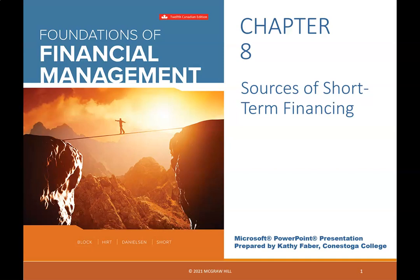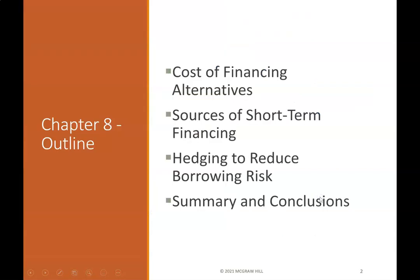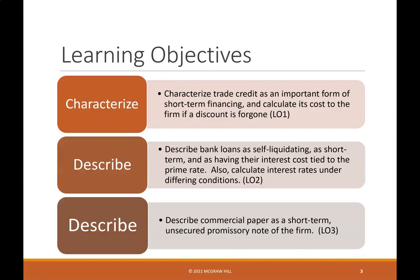Chapter 8: Sources of Short-Term Financing. Chapter 8 Outline covers Cost of Financing Alternatives, Sources of Short-Term Financing, Hedging to Reduce Borrowing Risk, and Summary and Conclusions.